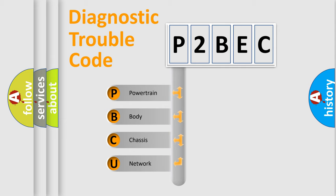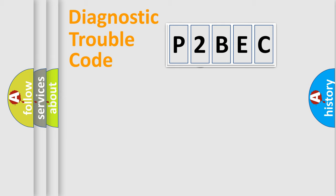We divide the electric system of automobile into four basic units: Powertrain, Body, Chassis, and Network. This distribution is defined in the first character code.